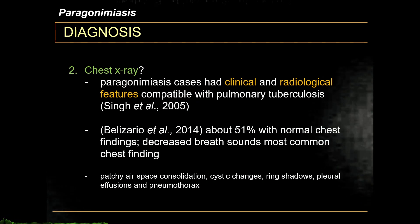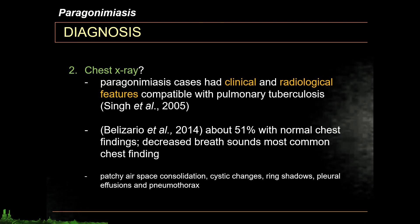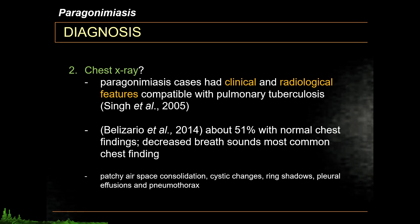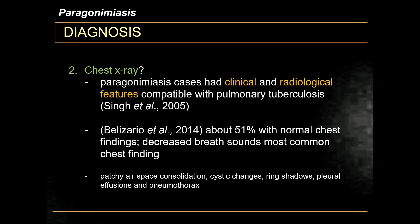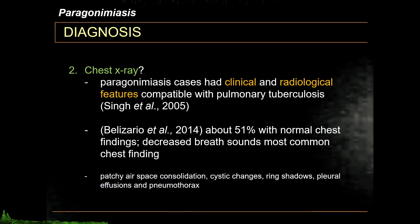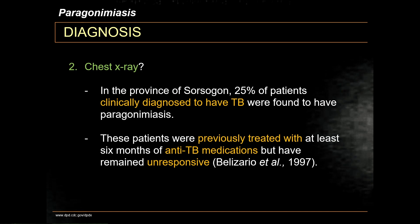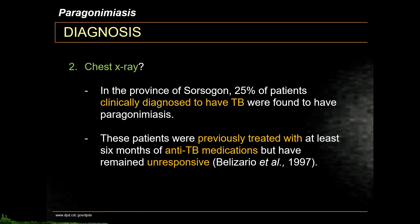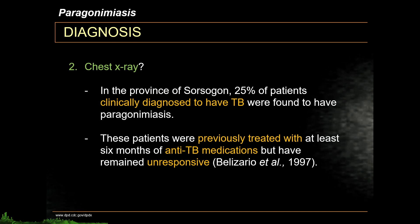The diagnosis of Paragonimiasis can be done using chest x-ray — or can it? Paragonimiasis cases have clinical and radiological features comparable with pulmonary tuberculosis, and up to 51% of pulmonary Paragonimiasis manifest with normal chest findings. A problem in misdiagnosing pulmonary Paragonimiasis as pulmonary tuberculosis is that some patients are treated for PTB for at least 6 months but remain unresponsive to treatment.